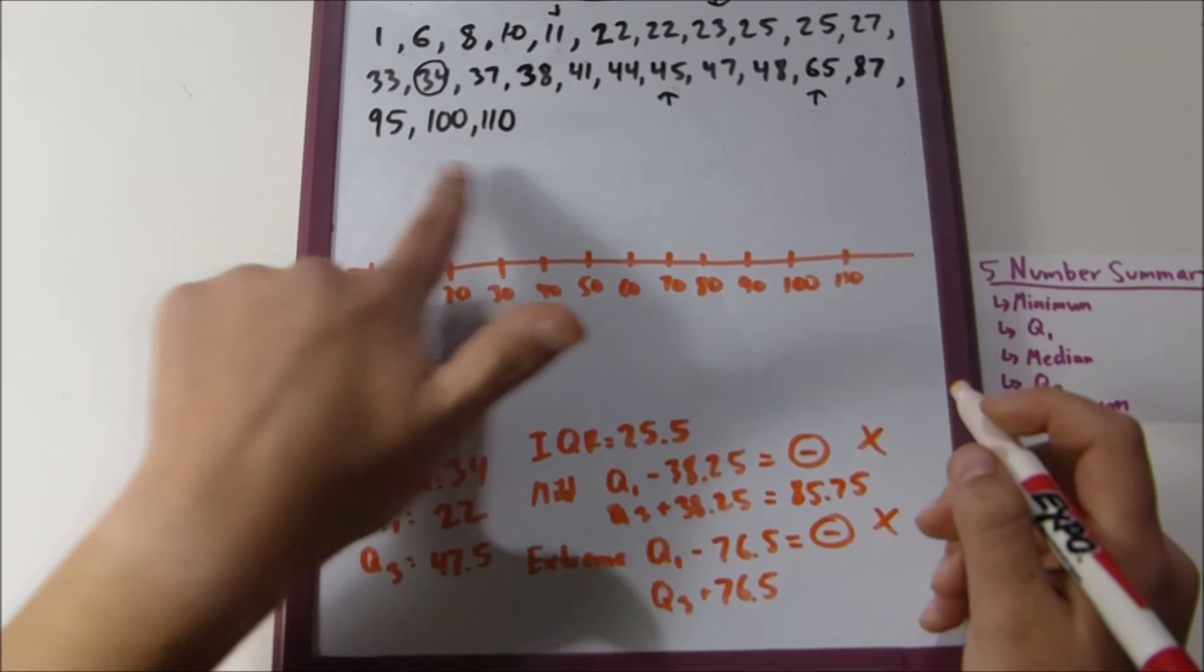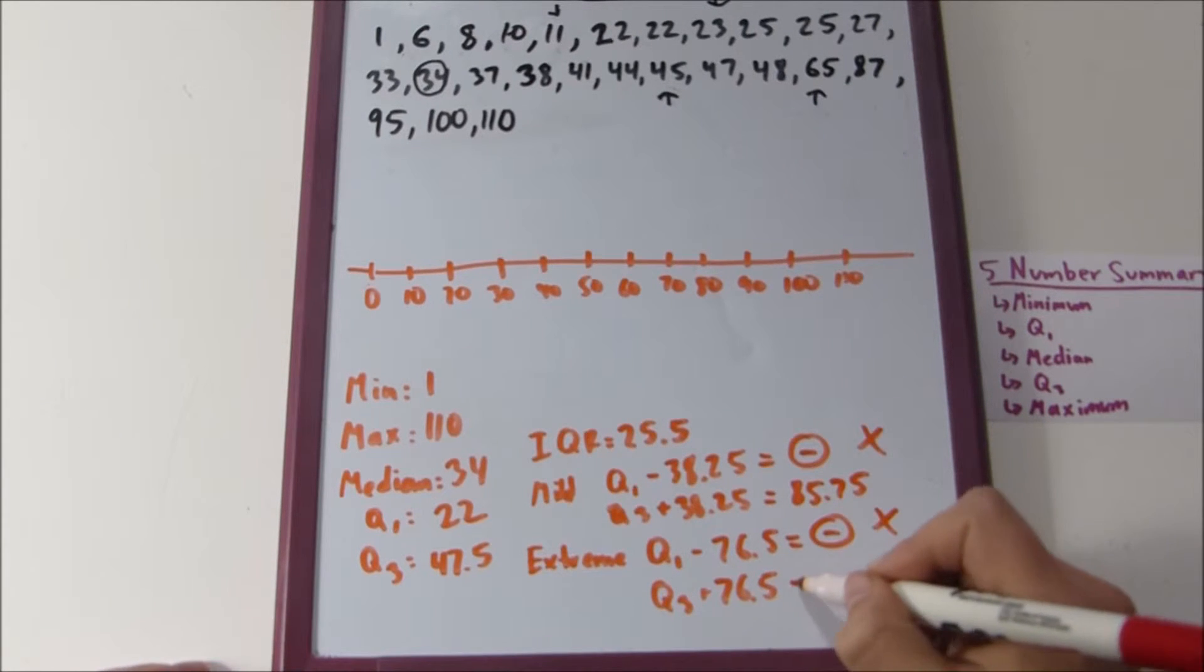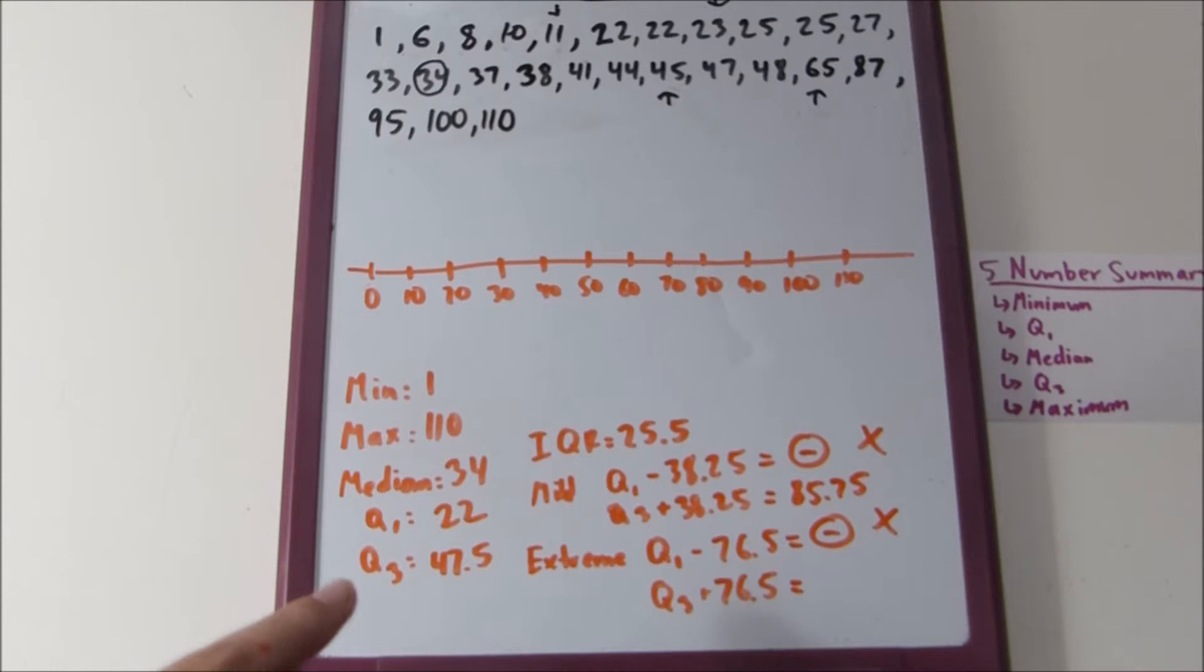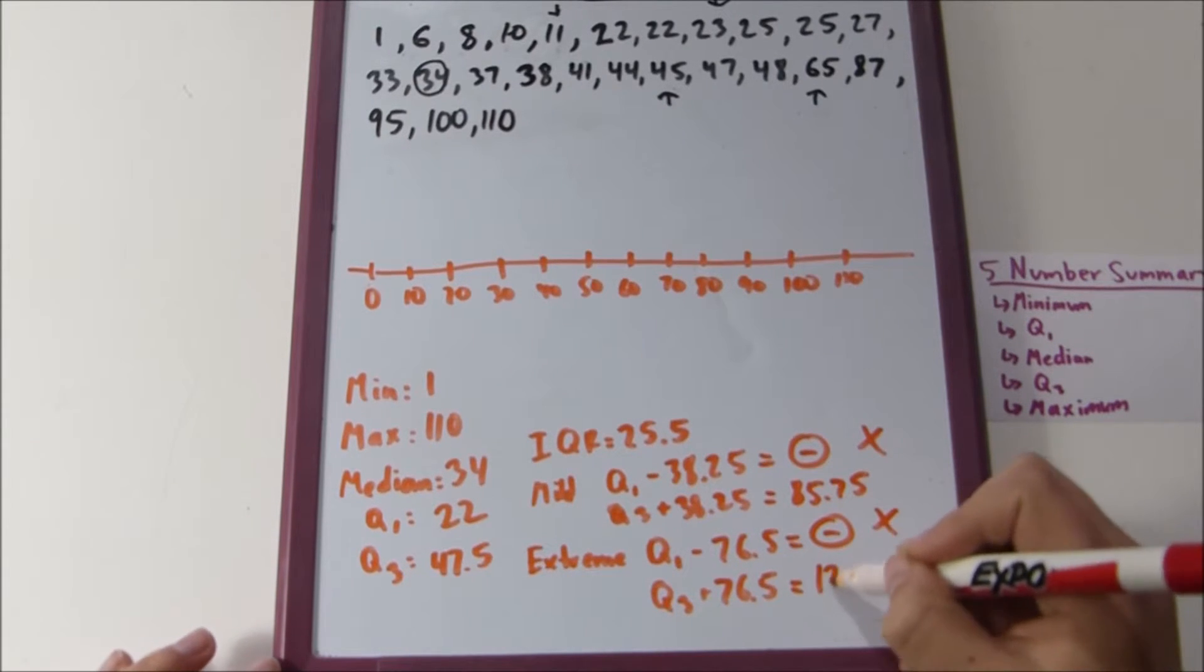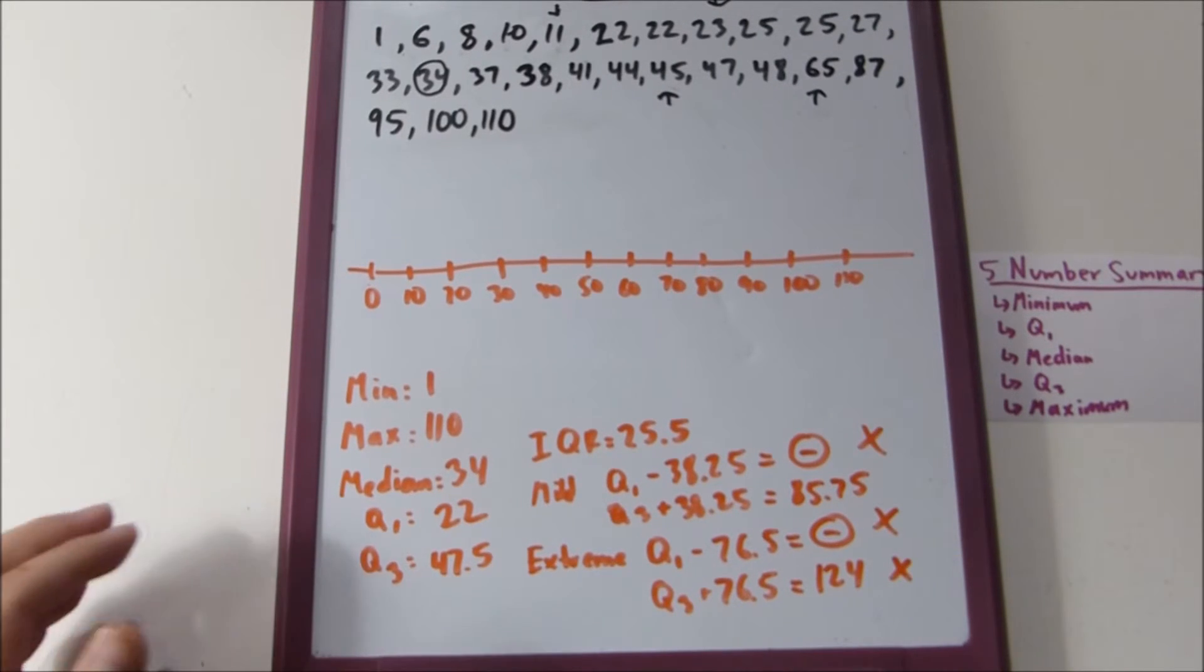As far as mild outliers on the other side, forty-seven point five plus thirty-eight point two-five is eighty-five point seven-five. And since we have some values that are larger than that, you know that you have some mild outliers. But you also have to make sure that you don't classify mild outliers as extreme outliers. Which is a hundred and twenty-four, which is greater than all the values, so we don't have any of those either.